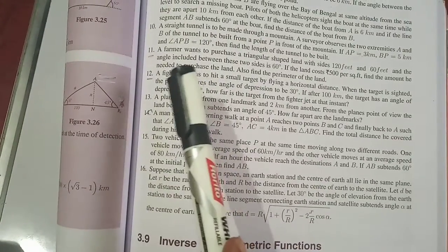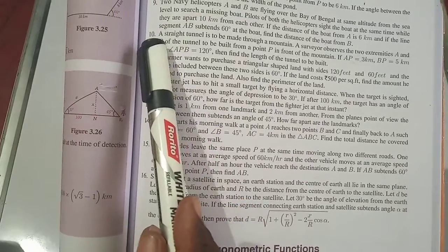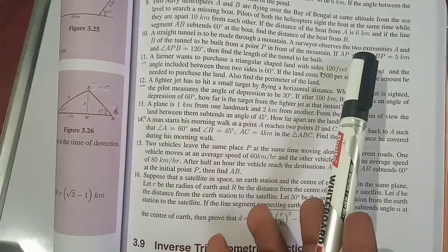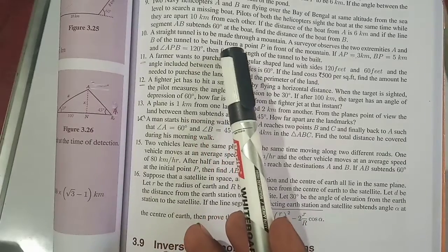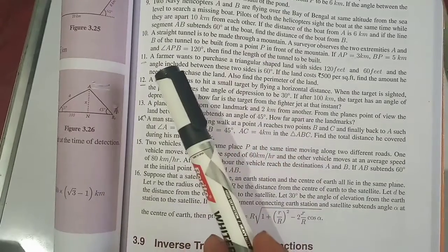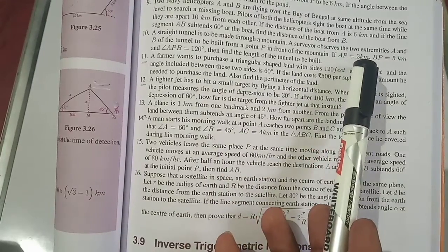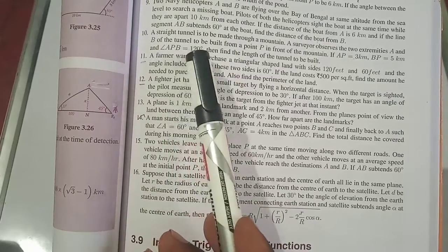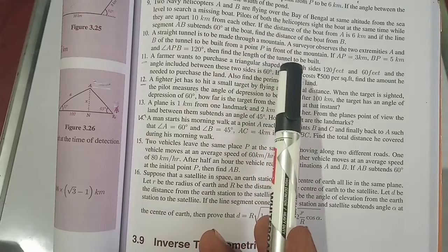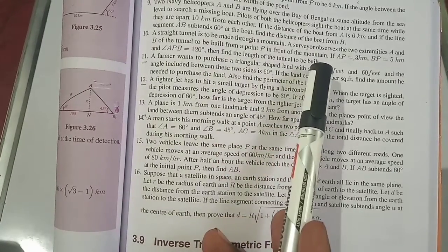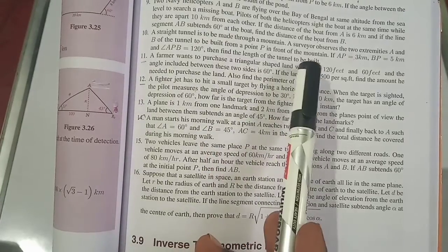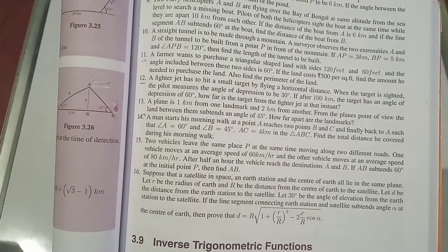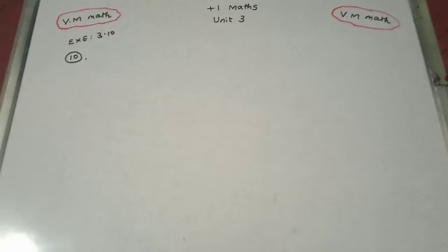Question number 10. A straight tunnel is to be made through a mountain. A surveyor observed the two extremities A and B of the tunnel to be built from a point P in front of the mountain. AP equals 3 km, BP equals 5 km, and the angle APB equals 120 degrees. Find the length of the tunnel to be built.